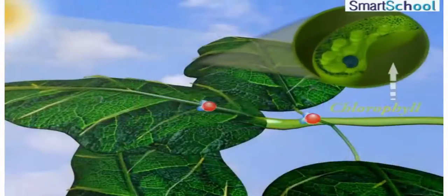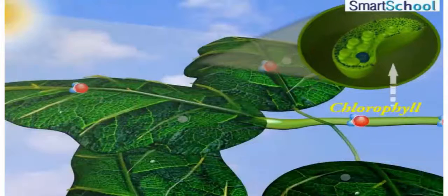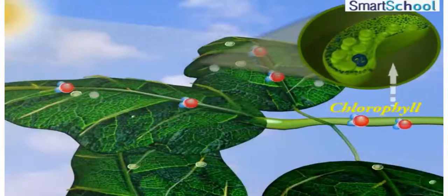The leaves have a green pigment called chlorophyll. It helps leaves to capture the energy of the sunlight.